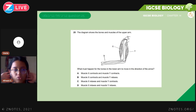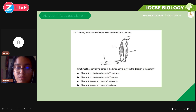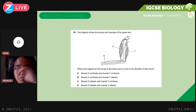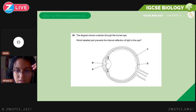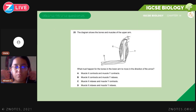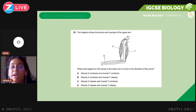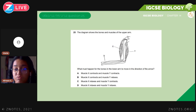Here's a past paper question from May/June 2012, Paper 1, Variant 2, Question 25. The diagram shows the bones and muscles of the upper arm. What must happen for the bones in the lower arm to move in the direction of the arrow — moving upwards, so you're flexing your arm? Muscle X is the biceps and Y is the triceps.